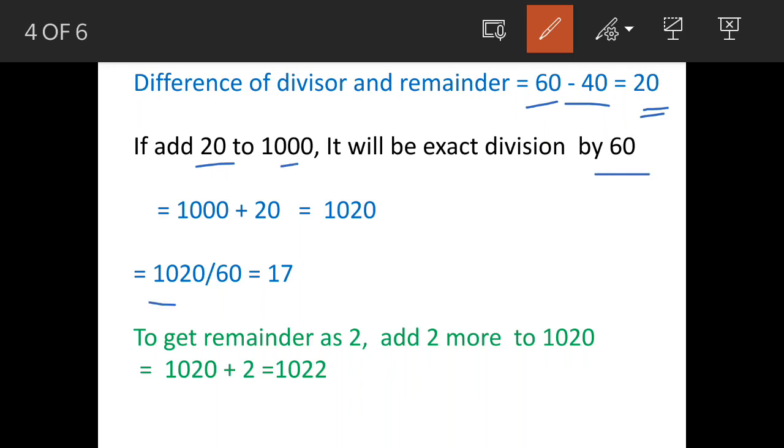So we'll add 20 to 1000 and then divide it by 60, so we'll see it is completely divisible by 60. But our requirement is to get remainder as 2, so that means we'll add 2 more. We have done 1000 plus 20, we are getting 1020, we add 2 more here so it becomes 1022, and this will give us the solution.